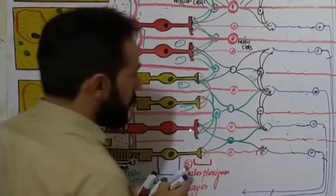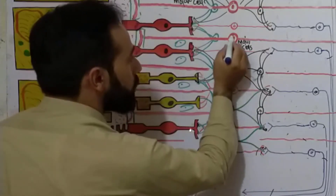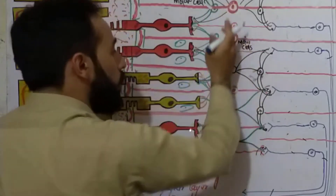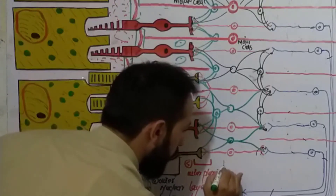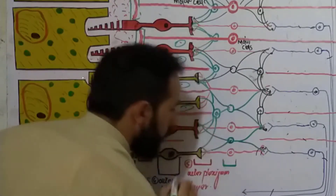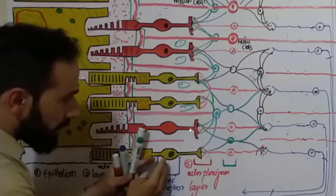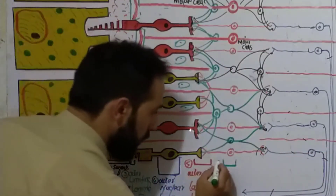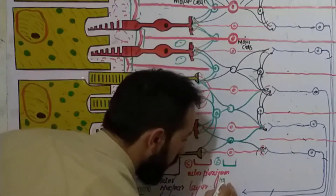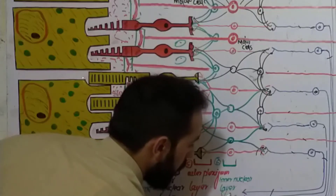Moving inside — here are the nuclei of the bipolar cells, the interplexiform cells, and the Müller cells. This layer contains all these nuclei. The outer nuclear layer was towards the outside; from here the inner retina starts. So this is called the inner nuclear layer — the sixth layer of the retina.